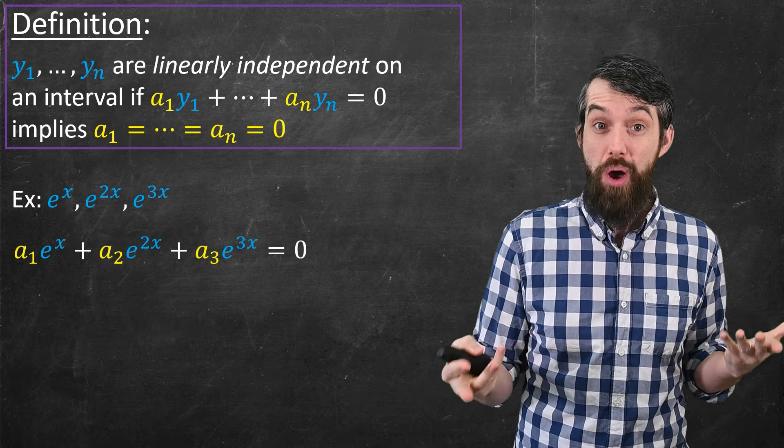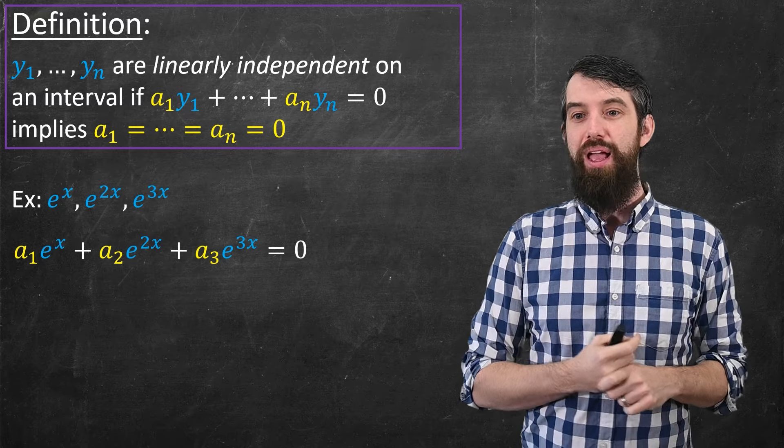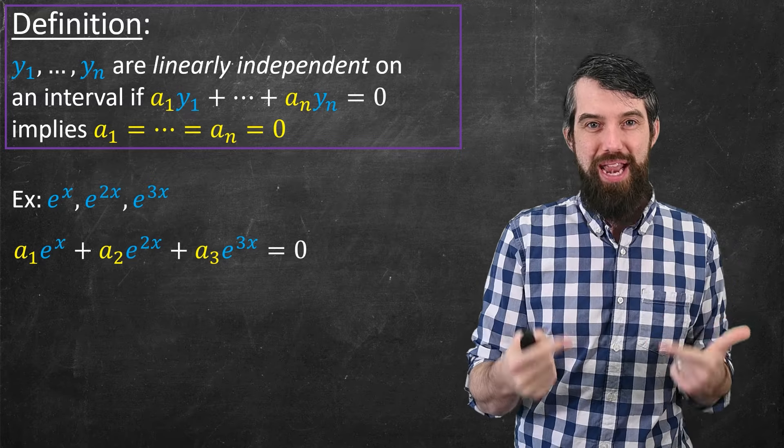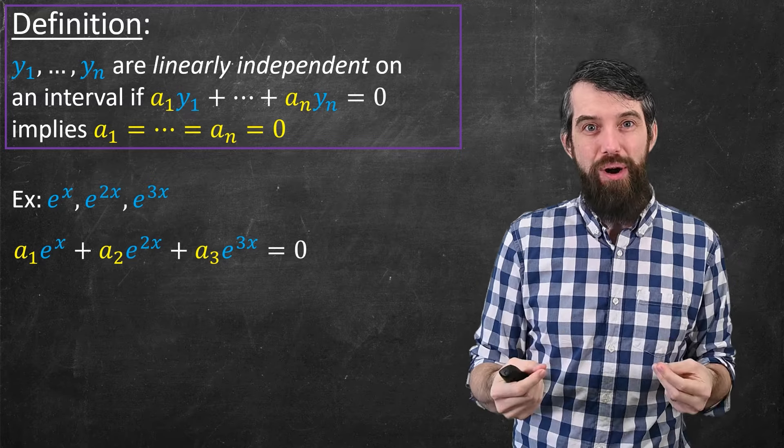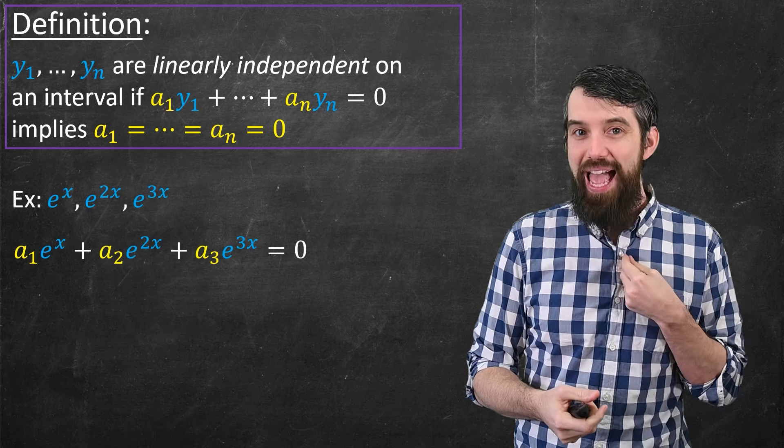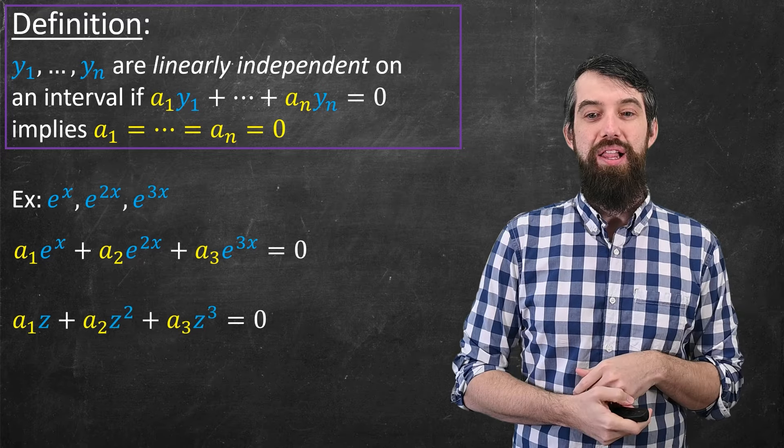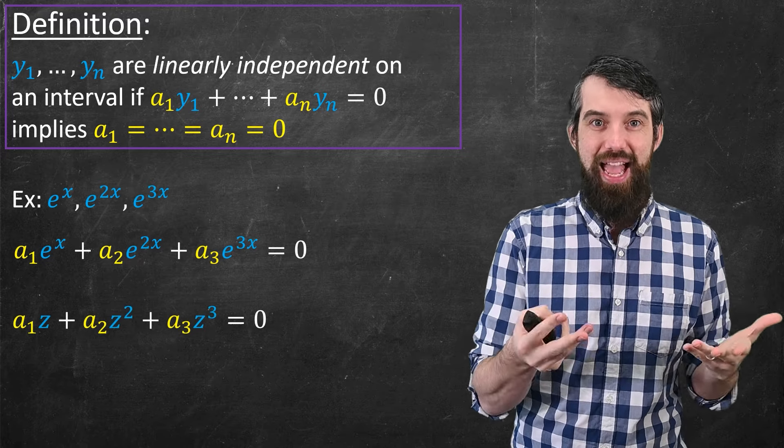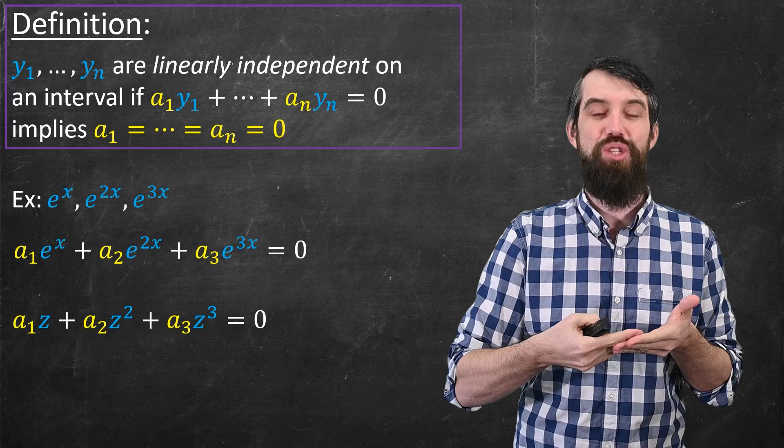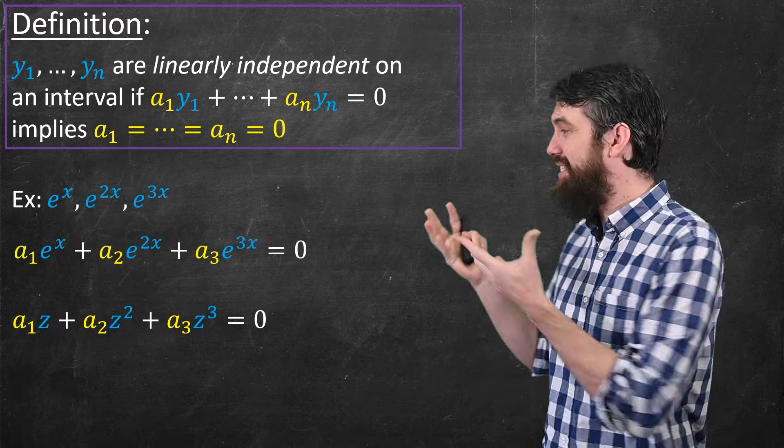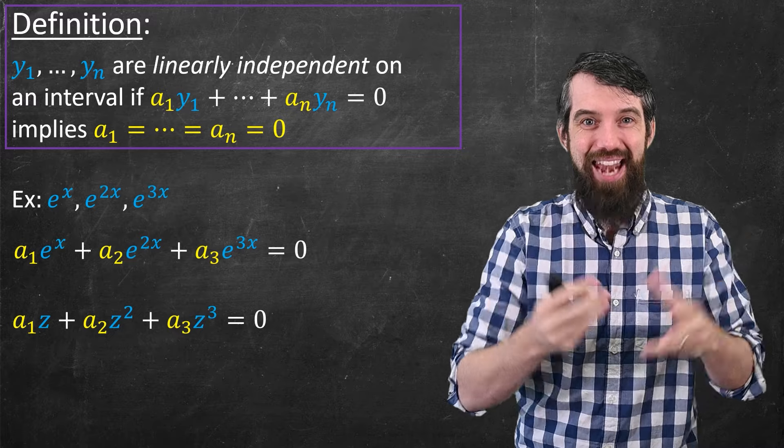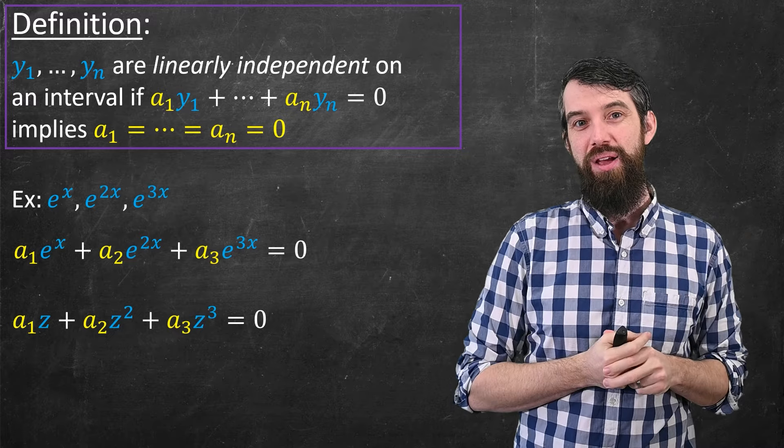So I'm going to see, can I take some linear combination of these and add them up to zero? When I look at this, because they're all exponentials with different powers, what if I said z was eˣ? So if z was eˣ, a change of variables, then eˣ is z, e²ˣ would be z², and e³ˣ would be z³. This is just a polynomial in z, which is eˣ.